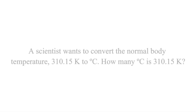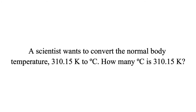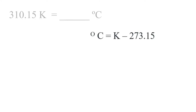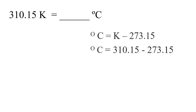A scientist wants to convert normal body temperature, 310.15 Kelvin, to degrees Celsius. How many degrees Celsius is 310.15 Kelvin? To convert Kelvin to degrees Celsius, use this formula. Substitute 310.15 for K. Subtract 273.15 from 310.15 and that is 37. The normal body temperature in degrees Celsius is 37.